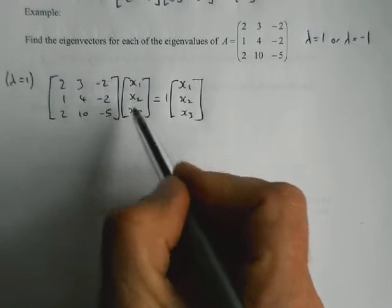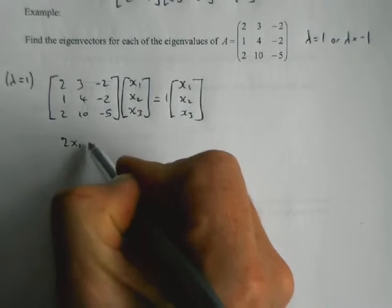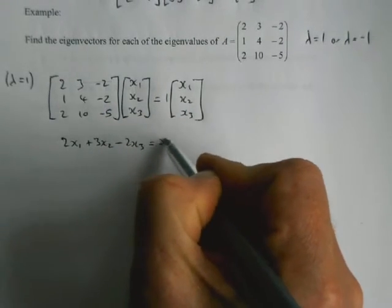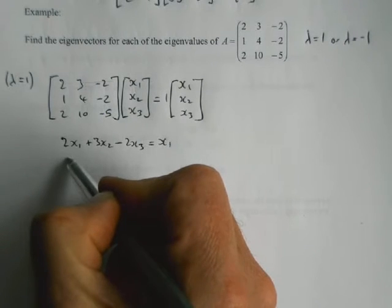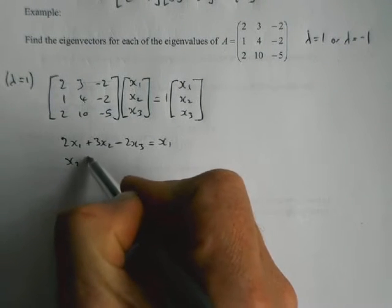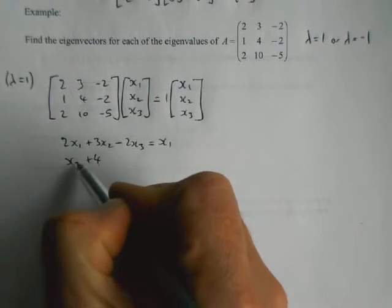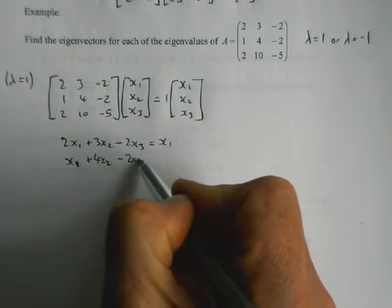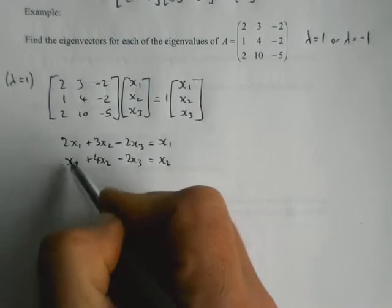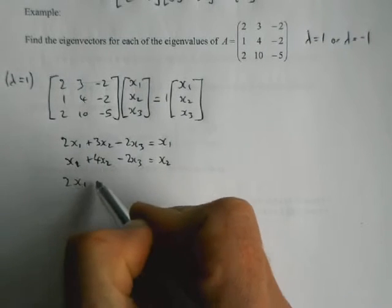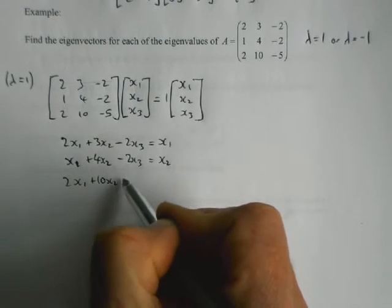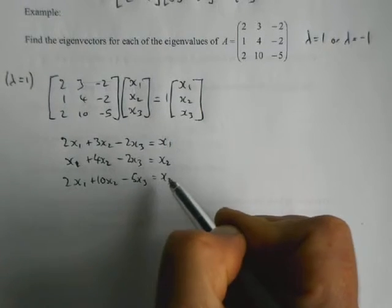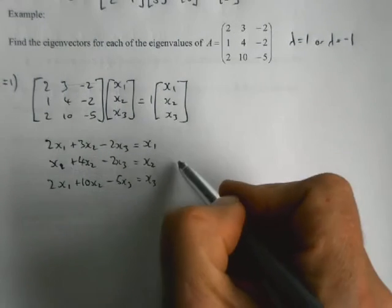And the best way to do it is to expand the brackets out. So first row into the column gives us 2x1 plus 3x2 minus 2x3 equals x1. Second row gives us x1 plus 4x2 minus 2x3 equals x2. And then we get 2x1 plus 10x2 minus 5x3 equals x3.